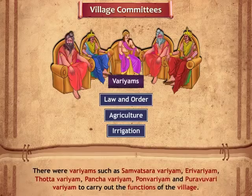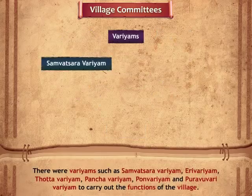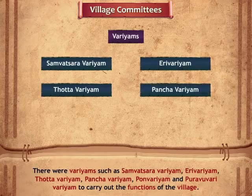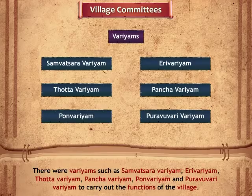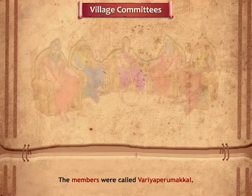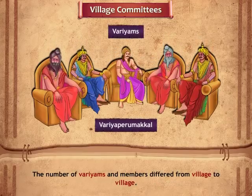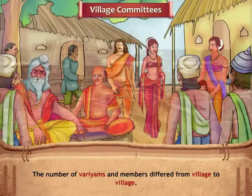There were Varyams such as Samvatsara Varyam, Eri Varyam, Thotta Varyam, Pancha Varyam, Ponna Varyam, and Puravu Varyam to carry out the functions of the village. The members were called Variya Perumakkal. The number of Varyams and members differed from village to village.